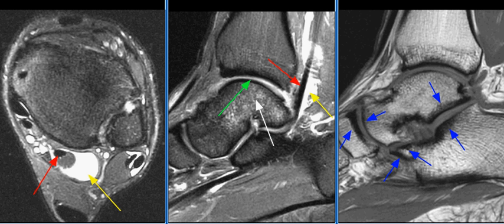There is bony sclerosis seen along the margins of the posterior subtalar, middle subtalar, talonavicular, and calcaneo-cuboid joints. This is a reactive change seen in jumping athletes like basketball players.